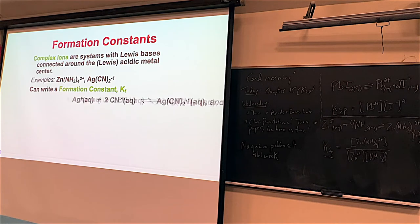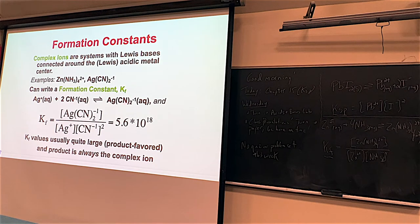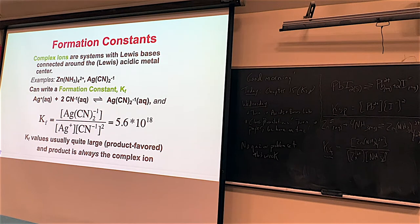It's kind of reversed, which is a little bit weird. This is the KF expression for AgCN₂⁻¹. The complex ion is the product and whatever goes into it are the reactants. In the zinc example from lab, Zn(NH₃)₄²⁺ would be the product and the reactants would be Zn²⁺ and NH₃ to the fourth power because there are four of them. For AgCN₂⁻¹, silver ion times cyanide squared would be the denominator.